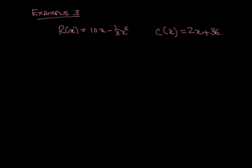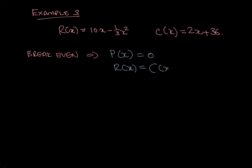The first thing was to work out what happens at break even. Remember that at break even, profit is equal to 0. Profit is the difference between revenue and cost. So I need to solve by equating: 10x minus 1/3 x squared equals 2x plus 36.